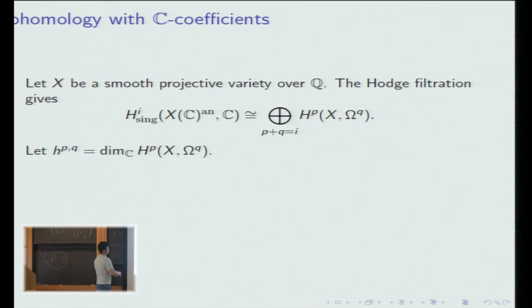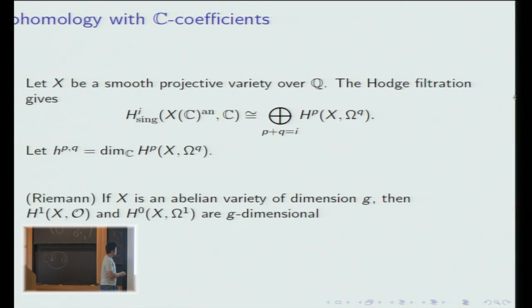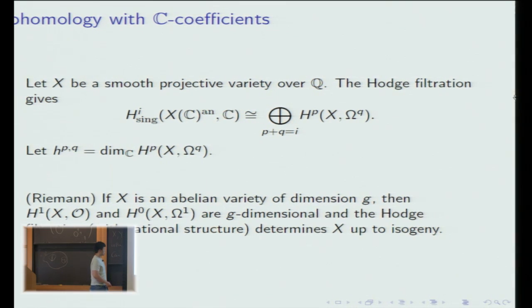I'm going to let h^{p,q} be this dimension. So these Hodge numbers are important invariants of the variety. Just as an example, if X is an abelian variety of dimension g, then both these Hodge numbers are g. Also, the Hodge filtration along with the rational structure determines X up to isogeny, so the Hodge filtration is a powerful invariant.